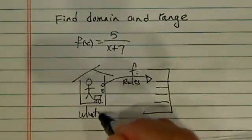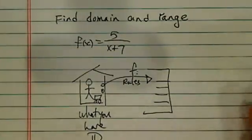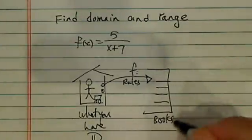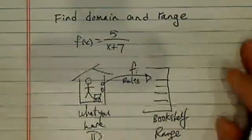What do you have? That's what we call the domain. And the bookshelf you're putting on it, that's called the range. So where you can put it on it.